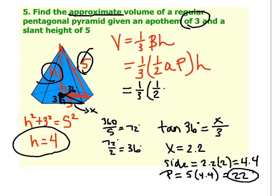1 third times 1 half times apothem of 3 times perimeter of 22 times the height of 4. And if we plug this into our calculator, it is going to give us an approximate answer of 44 cubic units.